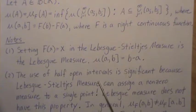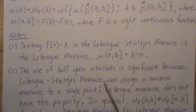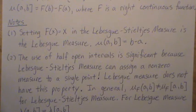The use of half-open intervals is significant because the Lebesgue-Stieltjes measure can assign a non-zero measure to a single point.